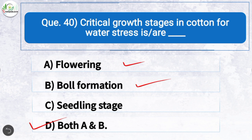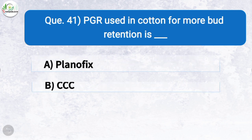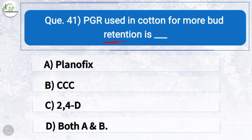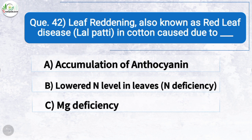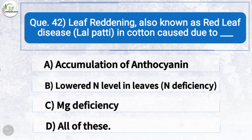Question forty: Critical growth stages in cotton for water stress are — the correct answer is option D: both flowering and ball formation. Question forty-one: PGR used in cotton for more bud retention is — the correct answer is option D: both Planofix and CCC. Question forty-two: Leaf reddening (red leaf disease or lal patti) in cotton is caused due to — the correct answer is option D: all of these — accumulation of anthocyanin, lowered nitrogen level in leaves, and magnesium deficiency.